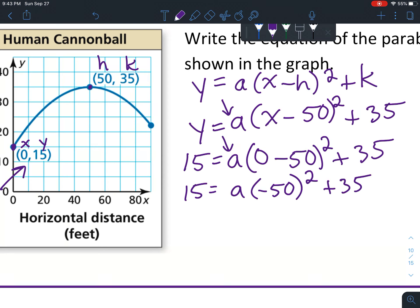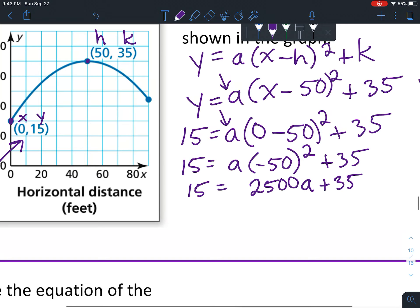2500 with this a attached to it - I usually like to write the variable after the number, so that's the same as a times 2500. Copy down what's left. Now we're down to a two-step equation.